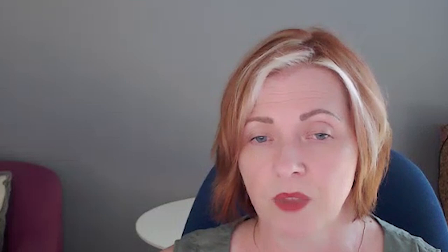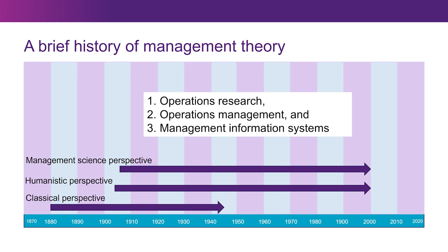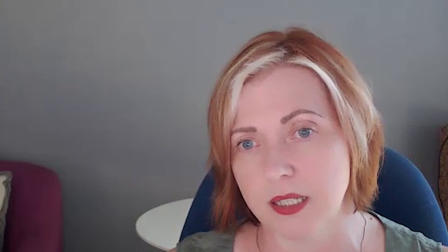Management sciences has three subsets: operations research, operations management and management information systems. Systems thinking is the ability to see both the distinct elements of a system or situation and the complex and changing interactions amongst these elements. We will focus on systems thinking later in the course.